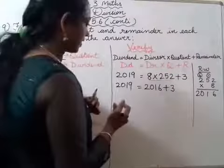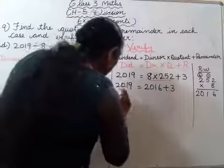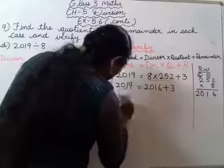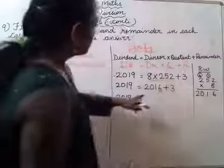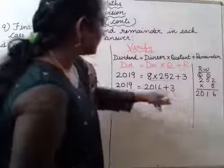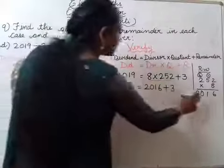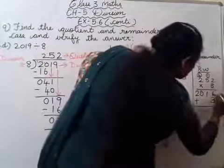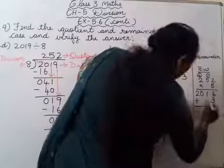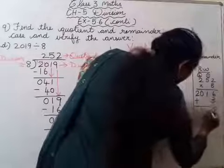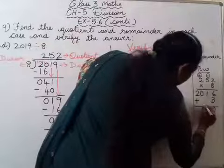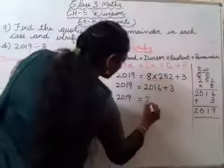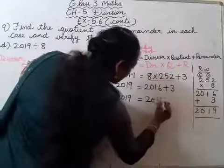Write each and every step carefully. Next, you have to write 2019 as it is. Next, 2016 plus three. Aapko yeh 2016 aur plus three karna hai. Six plus three, nine. Neeche koi aur number nahi hai, toh aise ki aise hi likh sakti hai. Zero, two. So kya answer hai? Two thousand nineteen.